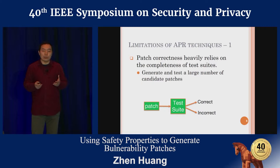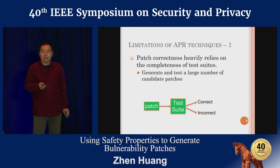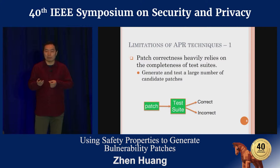In order to reduce the pre-patch window, many automatic program repair techniques, or APR techniques, have been proposed. Some leverage fixed patterns to mimic developers' patches. Some use genetic programming to generate patches. Some generate patches by borrowing code from correct programs. Others use symbolic execution and constraint solvers to generate patches.